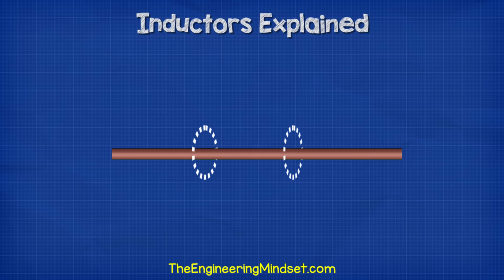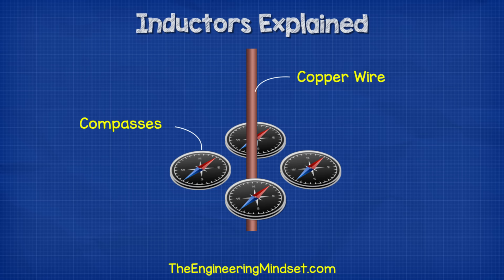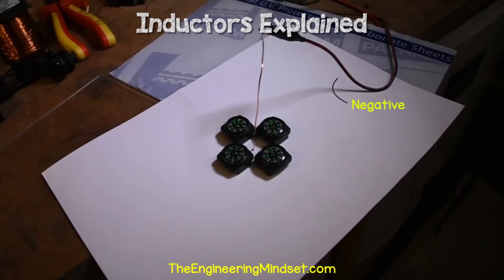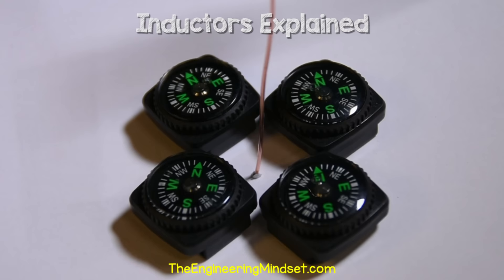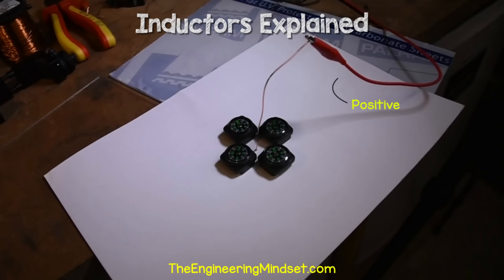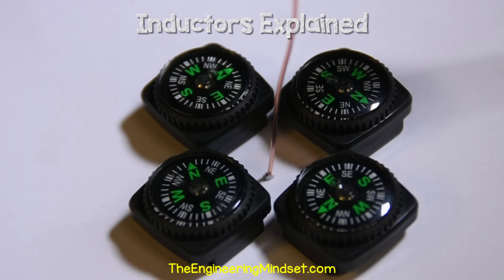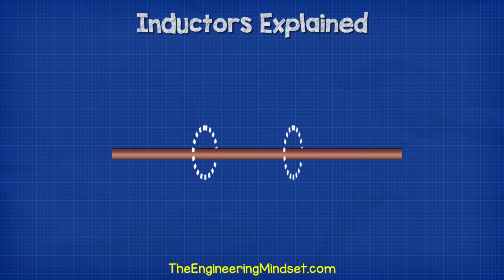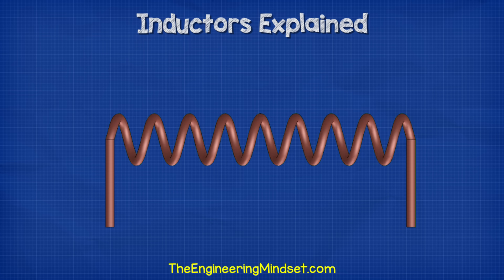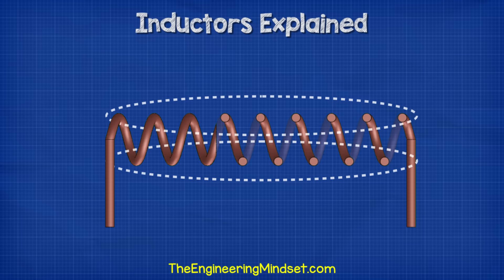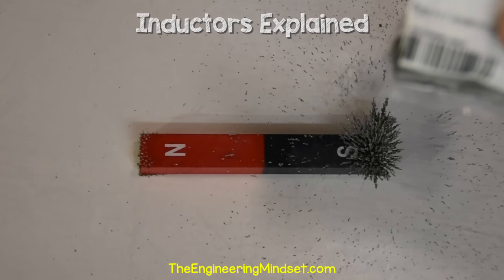So what's happening in the inductor for it to act like this? When we pass electrical current through a wire, the wire will generate a magnetic field around it. We can actually see this magnetic field by placing compasses around the wire — when we pass a current through the wire the compasses will move and align with the magnetic field. When we reverse the direction of the current, the magnetic field reverses and so the compasses will also reverse direction to align with this. The more current we pass through the wire, the larger the magnetic field becomes. When we wrap the wire into a coil, each wire again produces a magnetic field, but now it will all merge together and form one large, more powerful magnetic field.